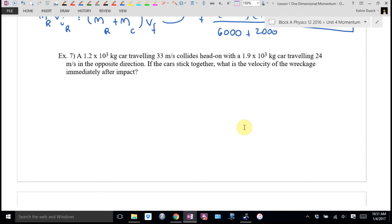Example 7: A 1.2×10³ kg car traveling 33 m/s collides head-on with a 1.9×10³ kg car traveling 24 m/s in the opposite direction. I'm going to underline opposite direction. I'm going to have to let one way be positive and one way be negative. If the cars stick together, what's the velocity of the wreckage immediately after impact? What's this question asking me to find? Velocity. Is there a collision here? This is a job for conservation of momentum.